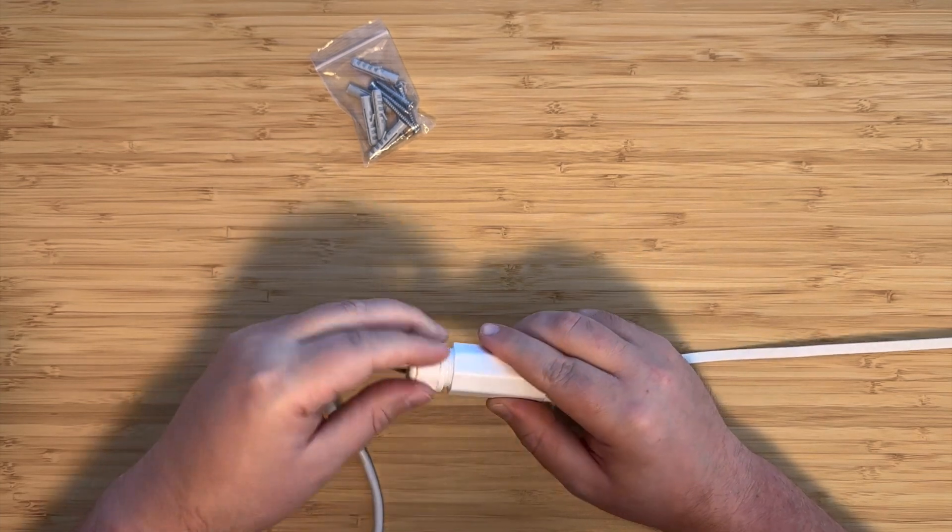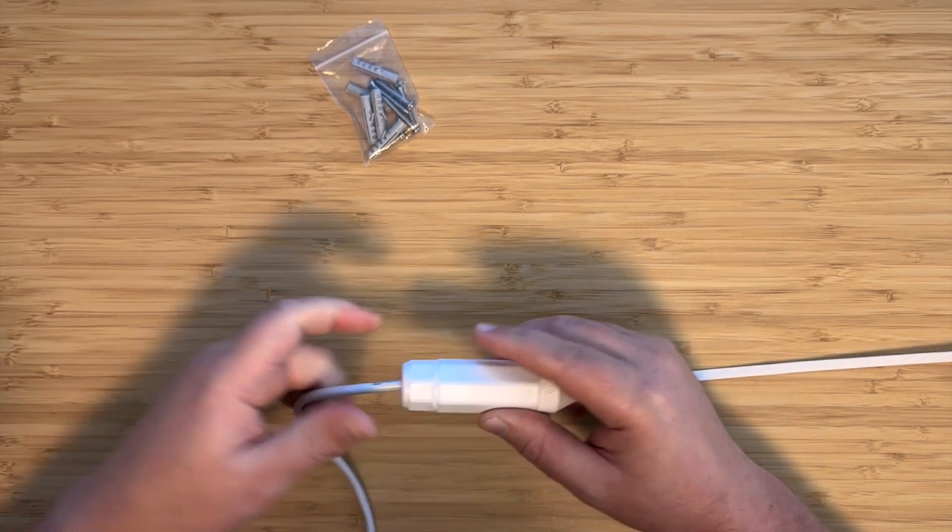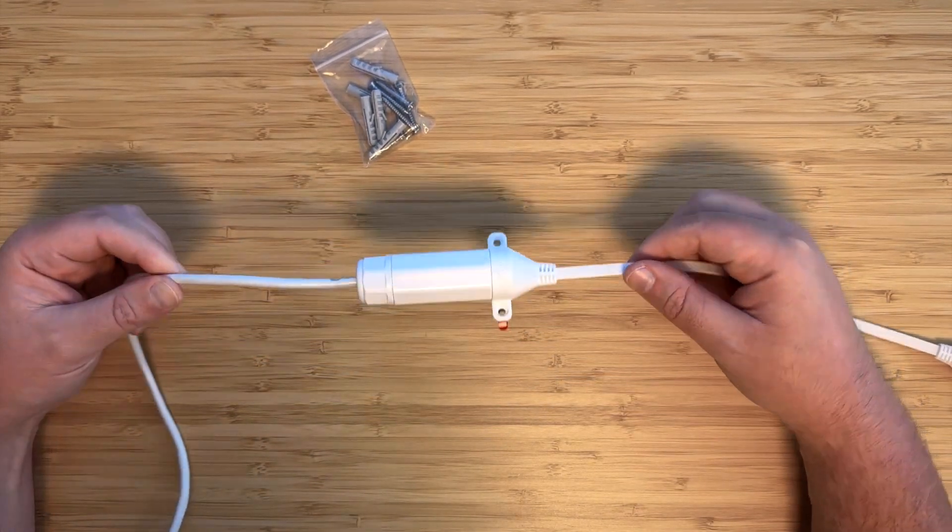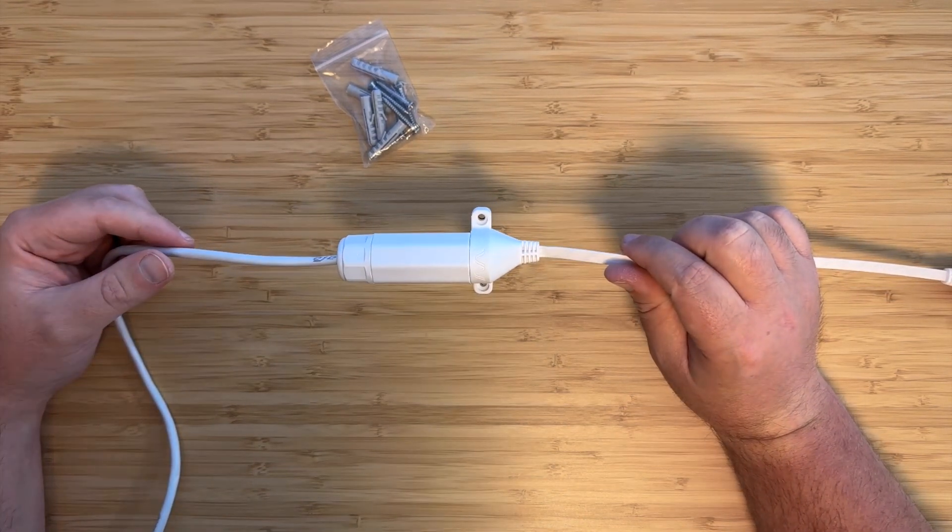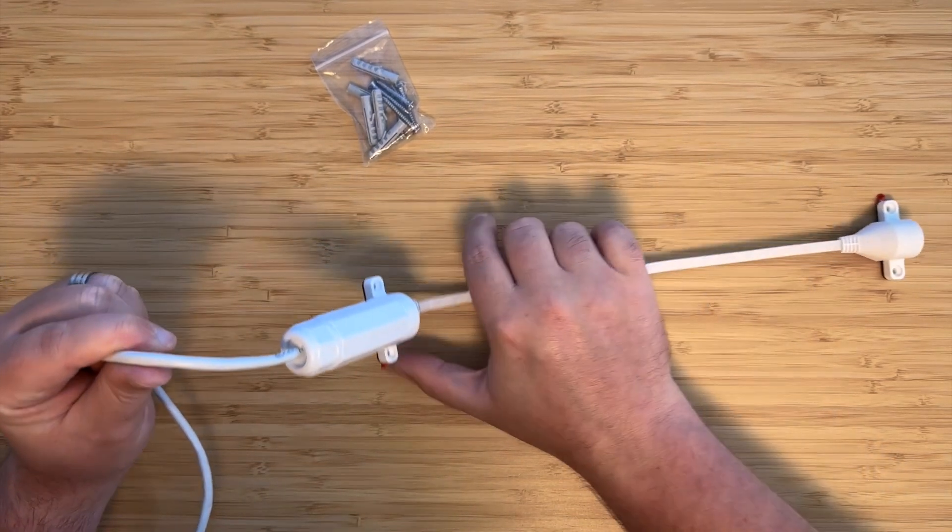And then we'll take our cap and tighten that down. And there we are. A perfectly weatherproofed outdoor ethernet connection. This will withstand the heaviest rainfall, snowfall, ice buildup. It gives an IP68 rating.